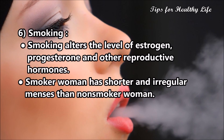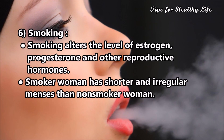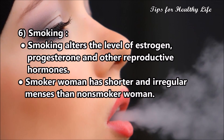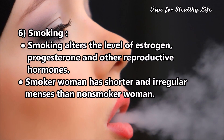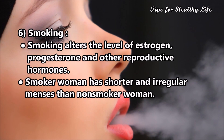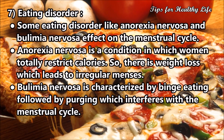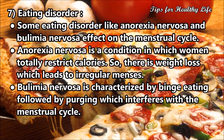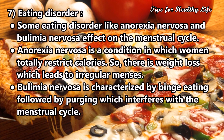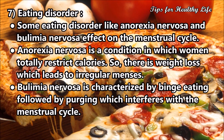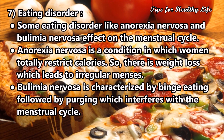Cause 6: Smoking. Smoking alters the levels of estrogen, progesterone, and other reproductive hormones. Women who smoke have shorter and more irregular menses than non-smoking women.